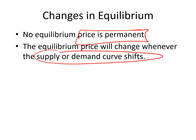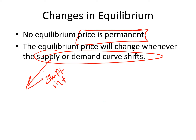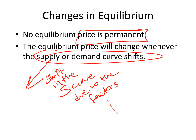No equilibrium price is permanent. The equilibrium price will change whenever the supply or demand curve shifts. Changes in supply and demand occur when the determinants of supply and demand change. For example, a shift in the supply curve due to factors such as subsidies, or a shift in the demand curve due to factors like taxes on income, income levels, advertising, and population — all of these can lead to a new equilibrium point.